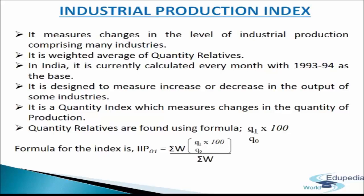The data relating to the production of the above mentioned industries are collected either monthly, quarterly, or yearly. We use the quantity relative method. Quantity relatives are found using the formula Q₁/Q₀ × 100. The above percentages are multiplied by corresponding weights. The formula used is: IIP = (σW × (Q₁/Q₀ × 100)) / σW, where Q₁ is the quantity produced in the current year, Q₀ is the quantity produced in the base year, and W is the weights.